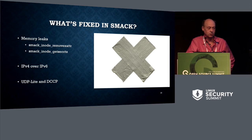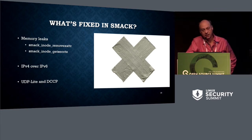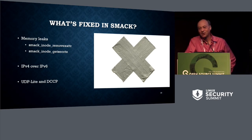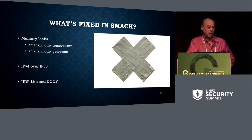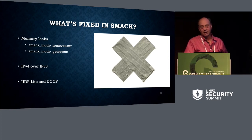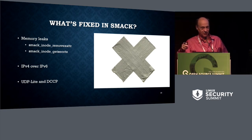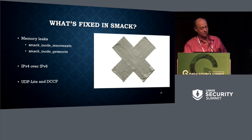IPv4 over IPv6 had some issues as well — those have been fixed. UDP-Lite and DCCP changes came in too. Generally, most of the problems that show up in SMAC come in when somebody fixes something else. We've had cases where inode initialization for sockets was optimized to the point where not enough information was put in early enough, which interfered with TCP socket creation. But those tend to get fixed in a reasonable fashion.